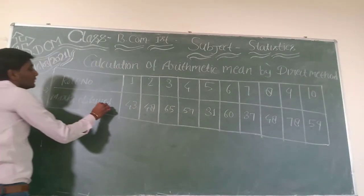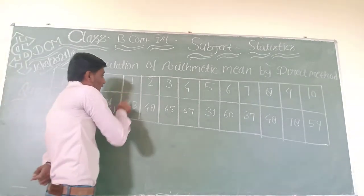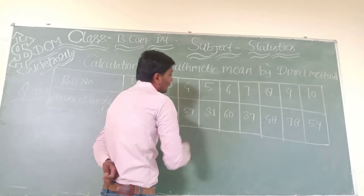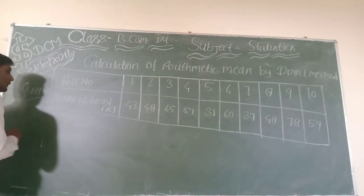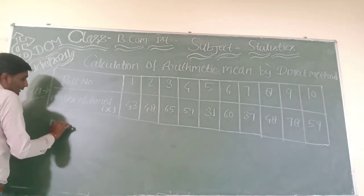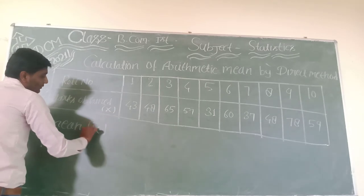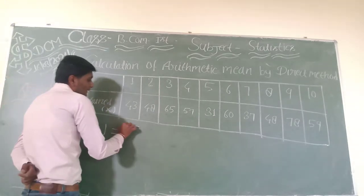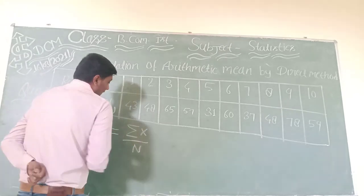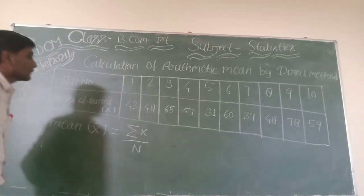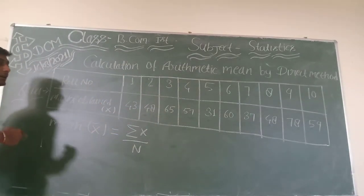To find the mean, we have a formula. Mean X bar equals sigma x upon N, where sigma x is the total sum and N is the total number.